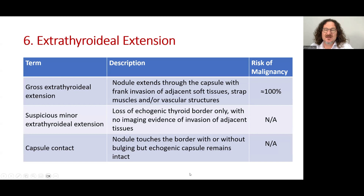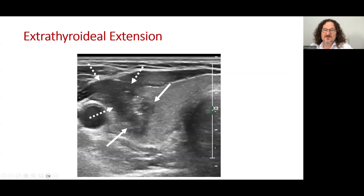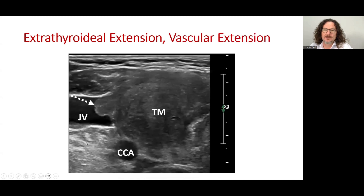The sixth descriptor is extrathyroidal extension, which may be gross — meaning the nodule extends through the capsule with frank invasion of the adjacent tissues, which is 100% malignant. Loss of echogenic borders without apparent invasion of adjacent tissues is called suspicious extrathyroidal extension. When the nodule touches the border but the echogenic capsule remains intact, it is called capsule contact. An example shows frank invasion in the perithyroidal area, and another shows a follicular carcinoma example with jugular vein involvement.